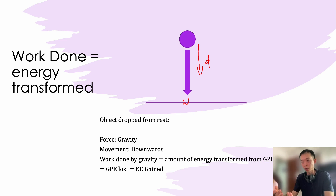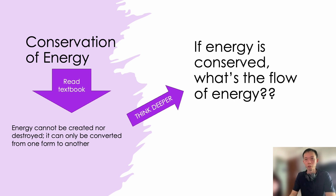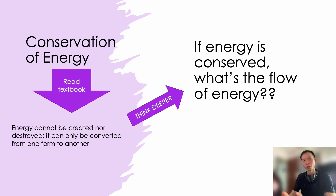This is very important because understanding the flow of energy is what will help us construct our equation to solve problems. At the Sec 3 and Sec 4 level, we have to think deeper and understand the implications behind the statements we memorize — memorizing alone is not good enough anymore. If energy is conserved, we need to identify the flow: if you can create a flowchart of what energy is converted to what, you can use that as a guide to construct a solving equation.